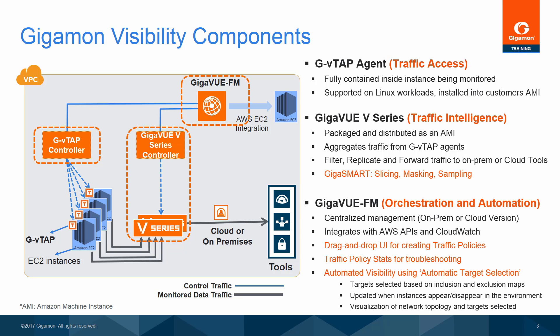The GigaVUE FM is the centralized management application that can be deployed either on-premises or in the cloud. The GigaVUE FM defines traffic policies using a simple drag-and-drop UI. It also integrates with AWS APIs for EC2 network inventory and monitors CloudWatch events to identify EC2 instance spin-up.